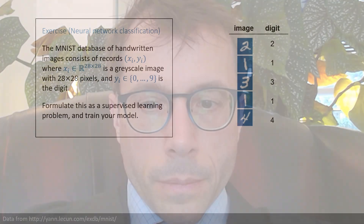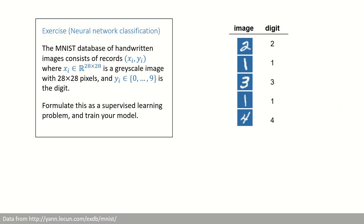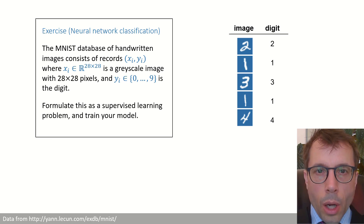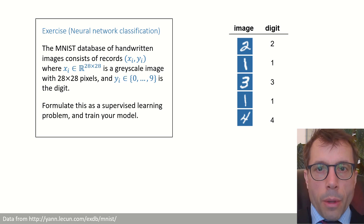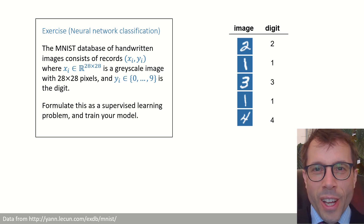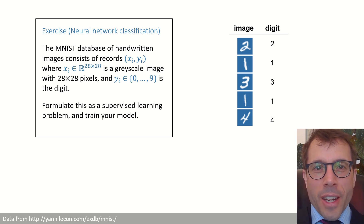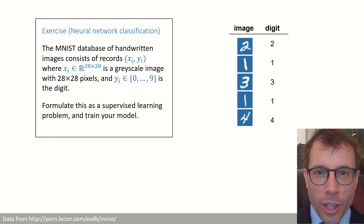Our last example is deep learning for image classification. I'm not going to go through the working here — you can find it in the lecture notes for the master's course on probabilistic machine learning. Don't be put off: it's literally the first topic in that course, and there's nothing more to it than exactly the same procedure we've been using throughout.